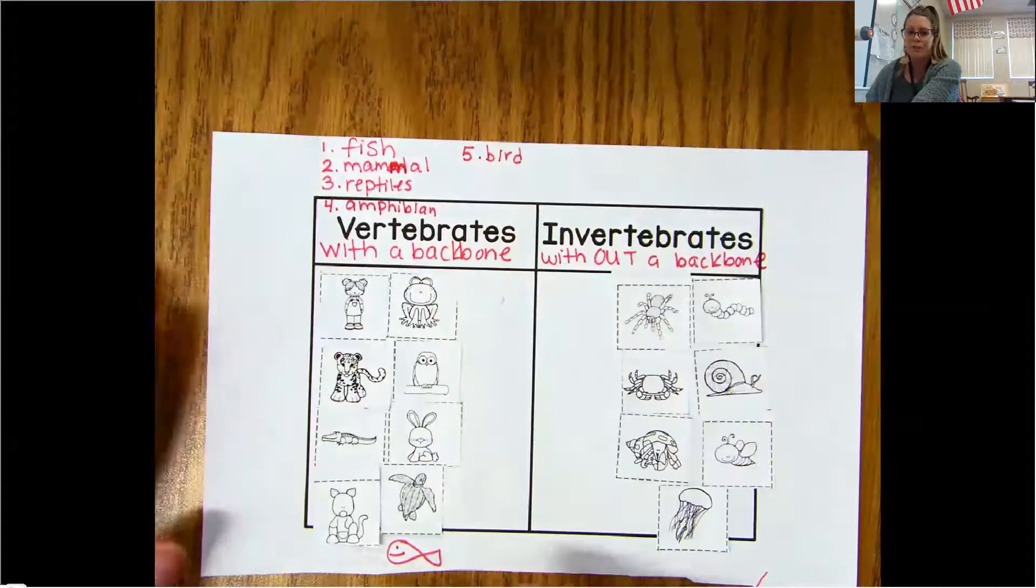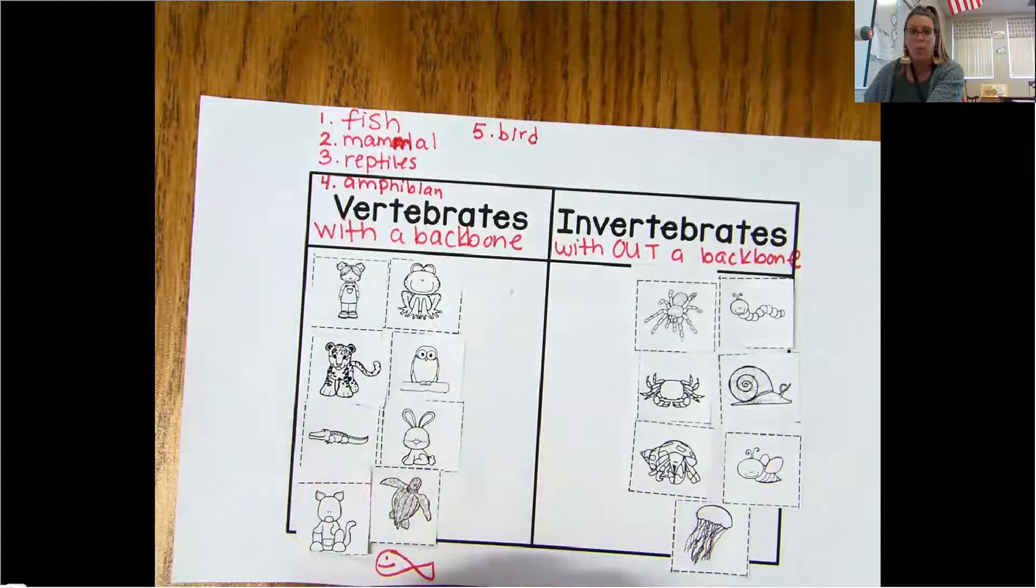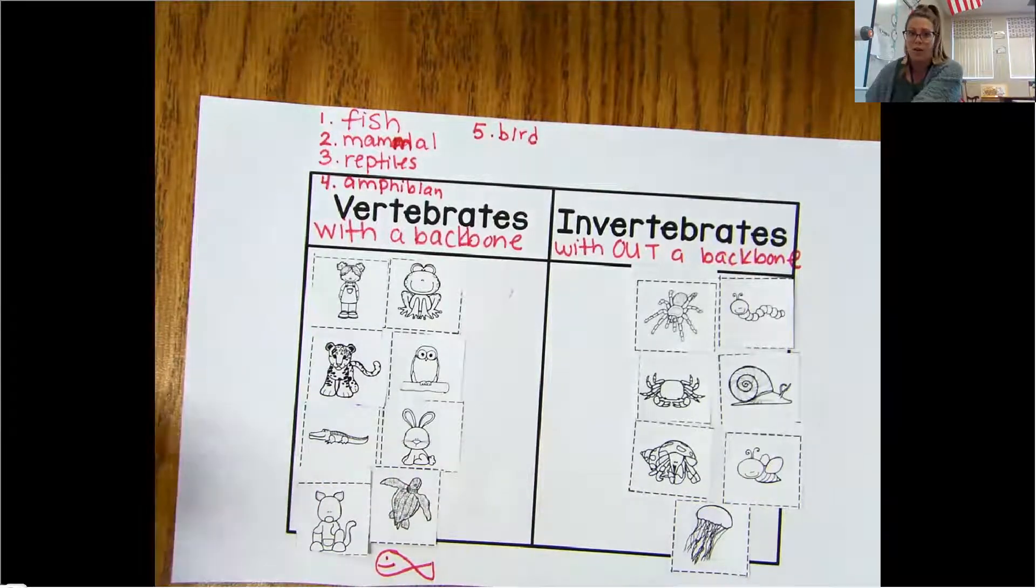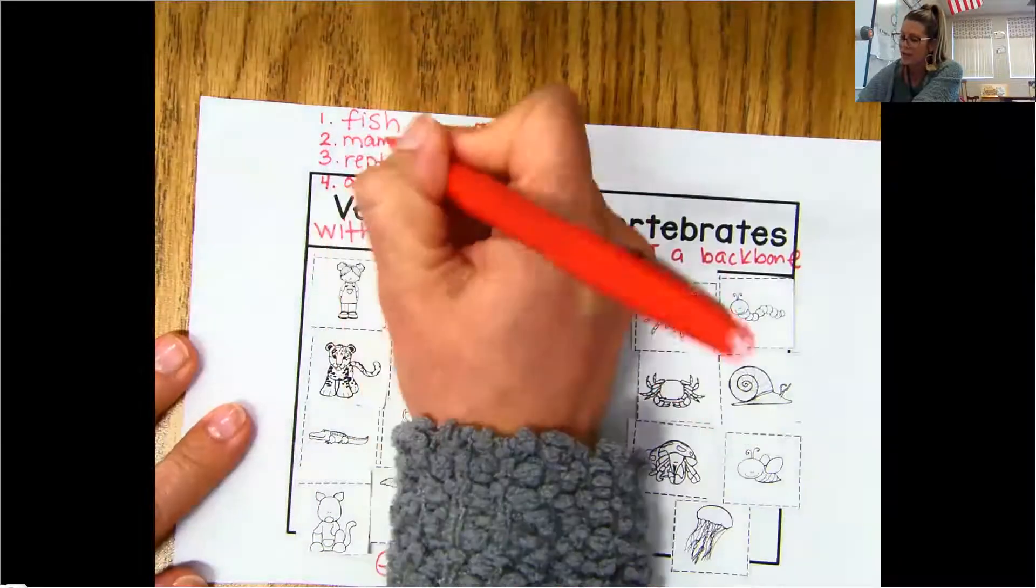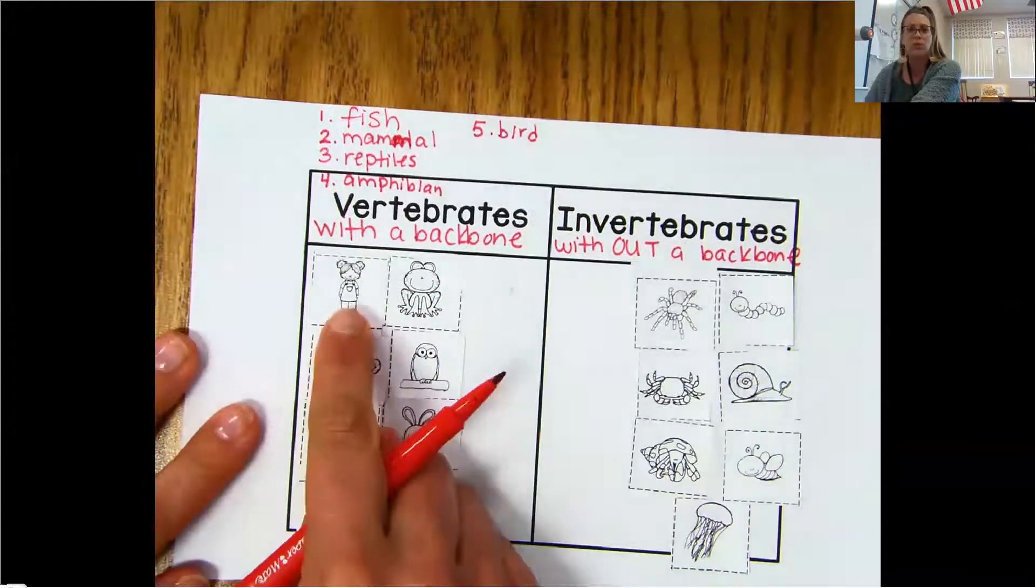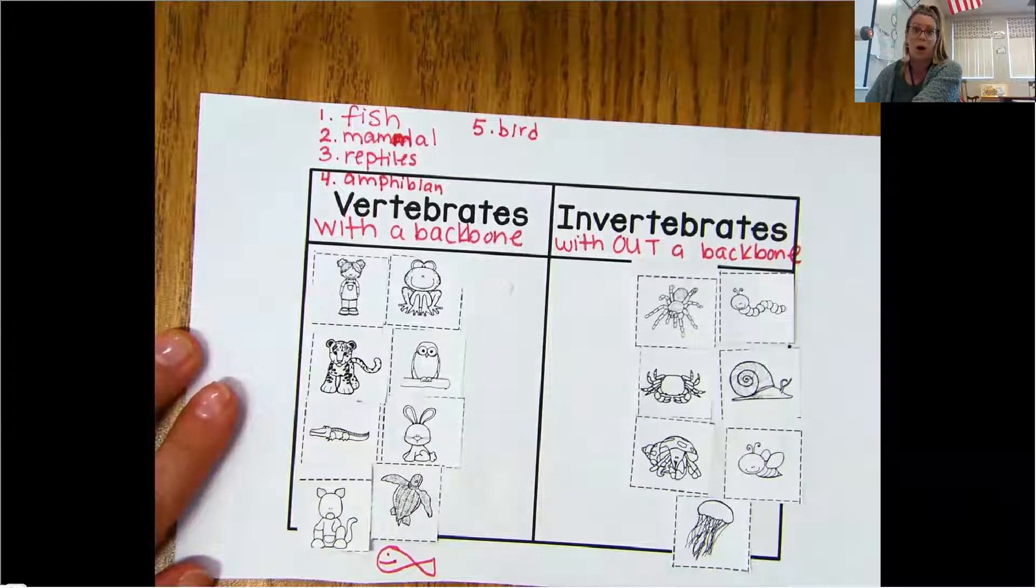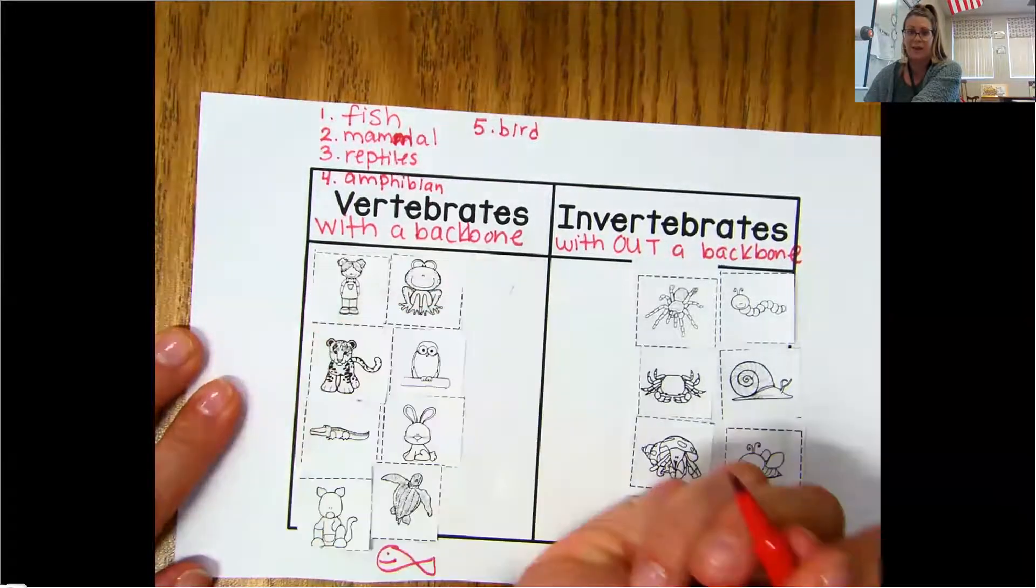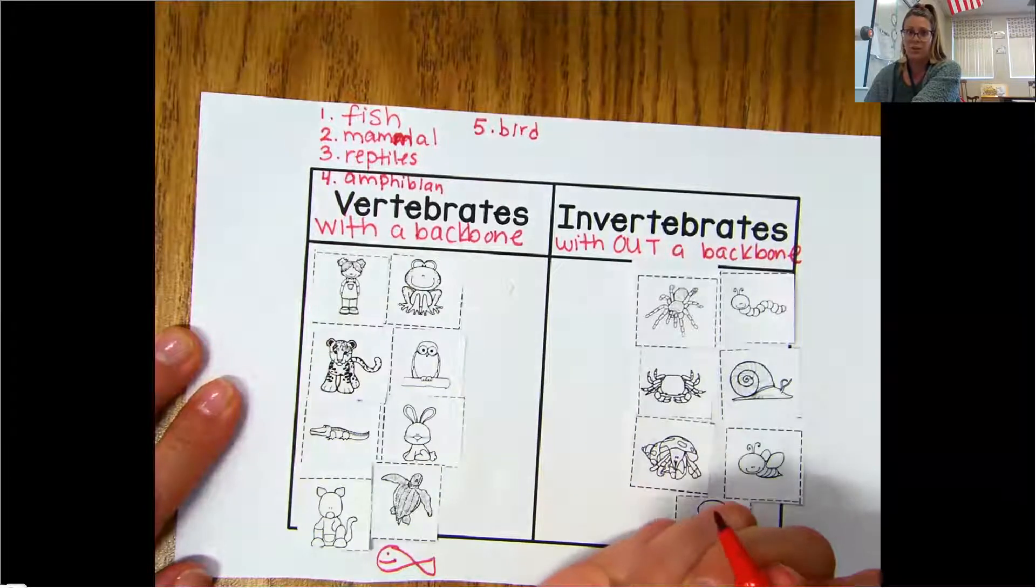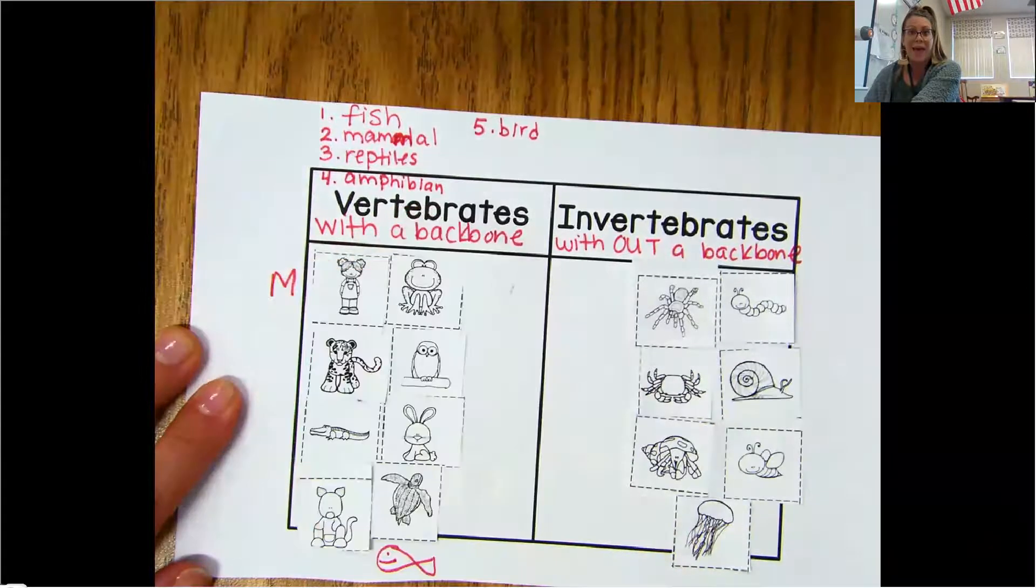So what we're going to do today is we're going to look at all of our vertebrates and we're going to classify them. What category do they fall under? And we can just write the first letter for it. So this little girl, she is a vertebrate. But what is she? Go ahead and write the letter next to it. Is she a fish, a mammal, a reptile, an amphibian, or a bird? You should have written an M because she's a mammal, right?